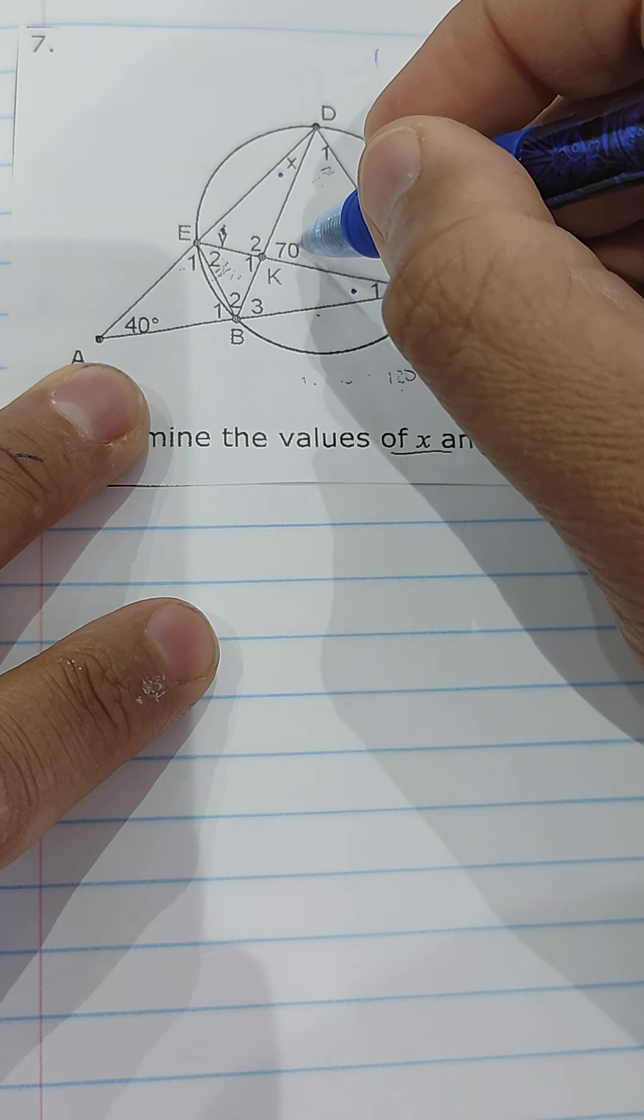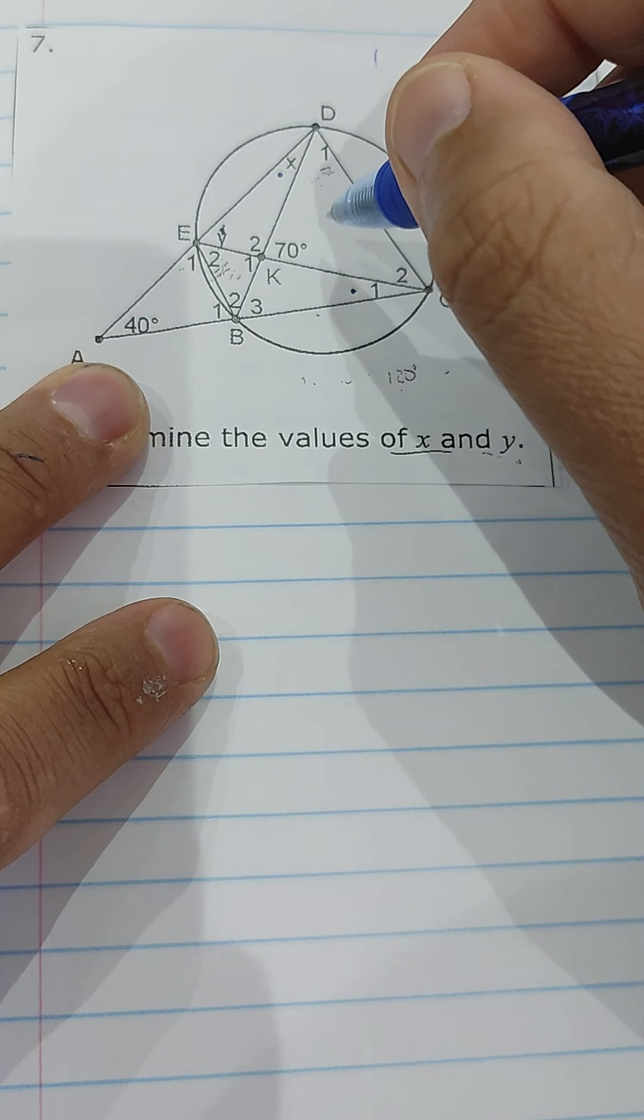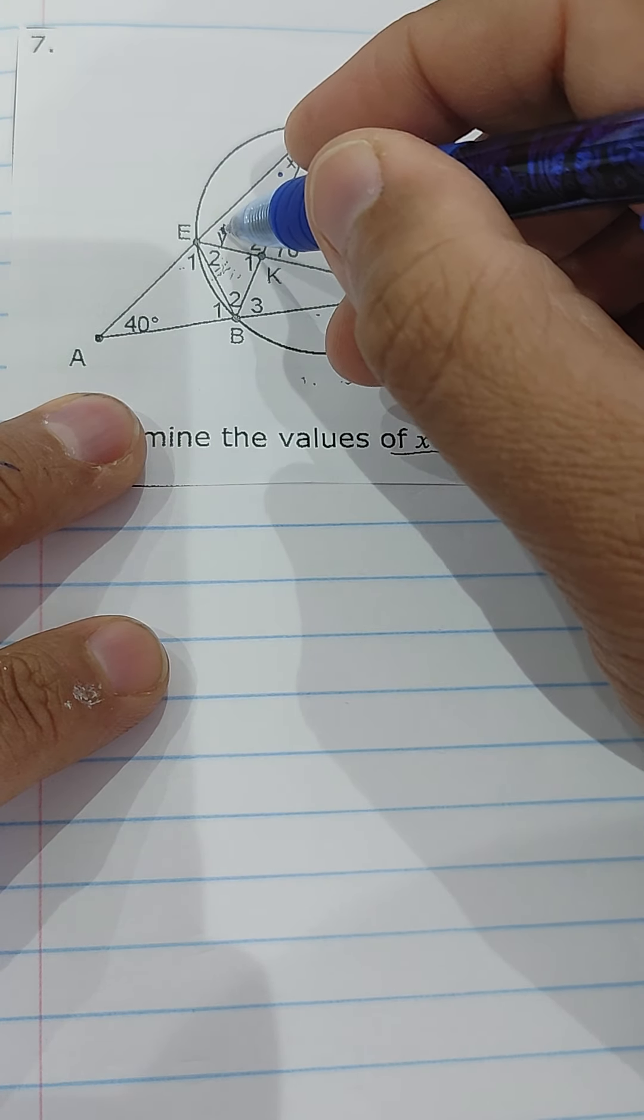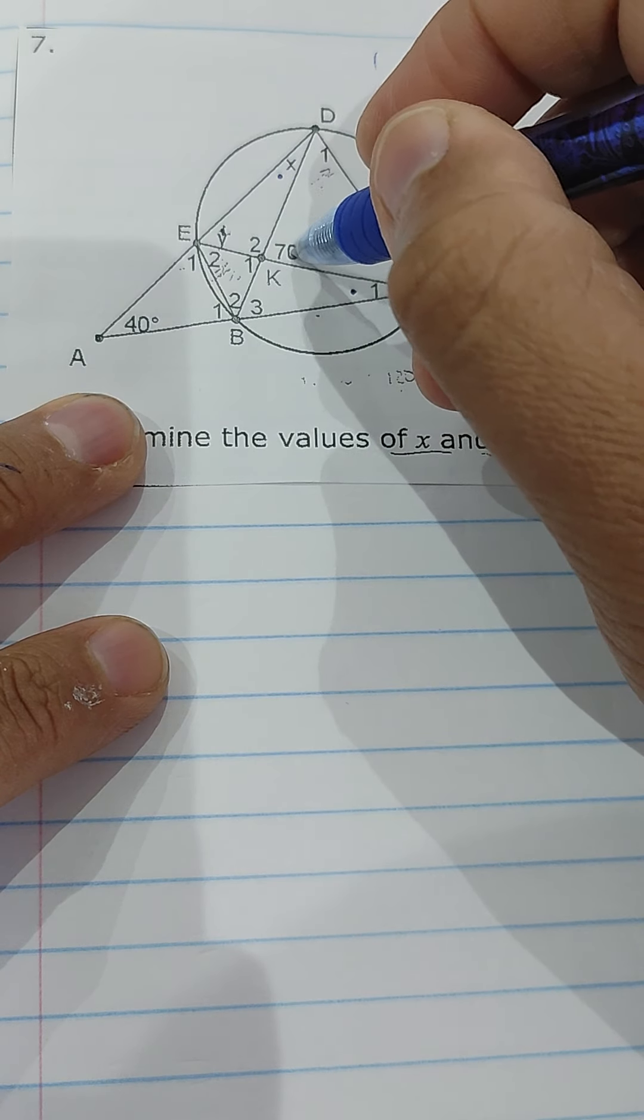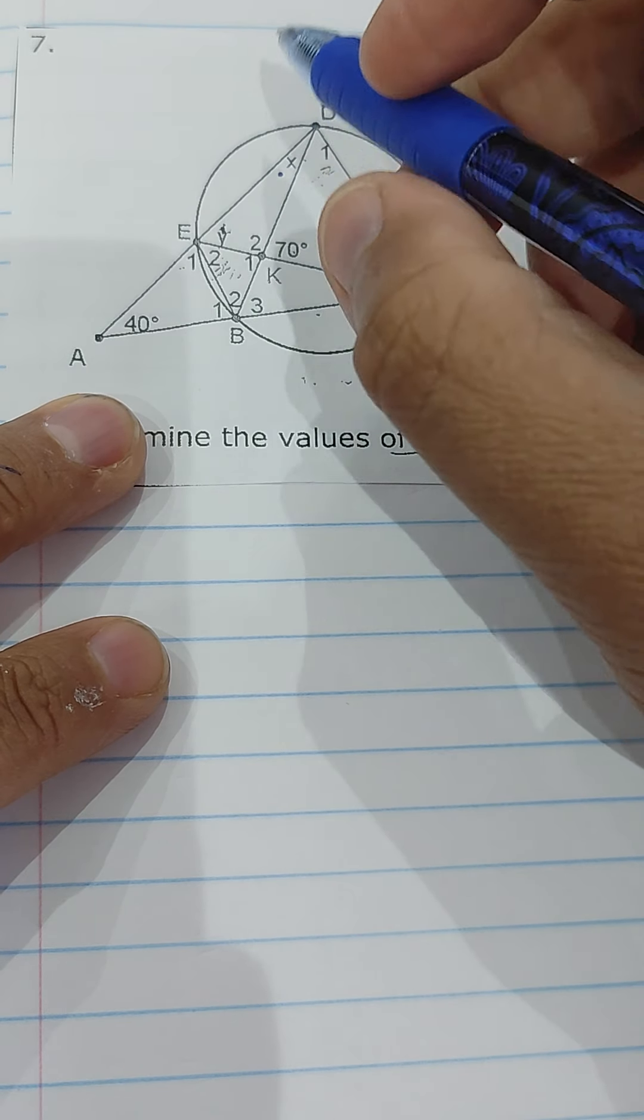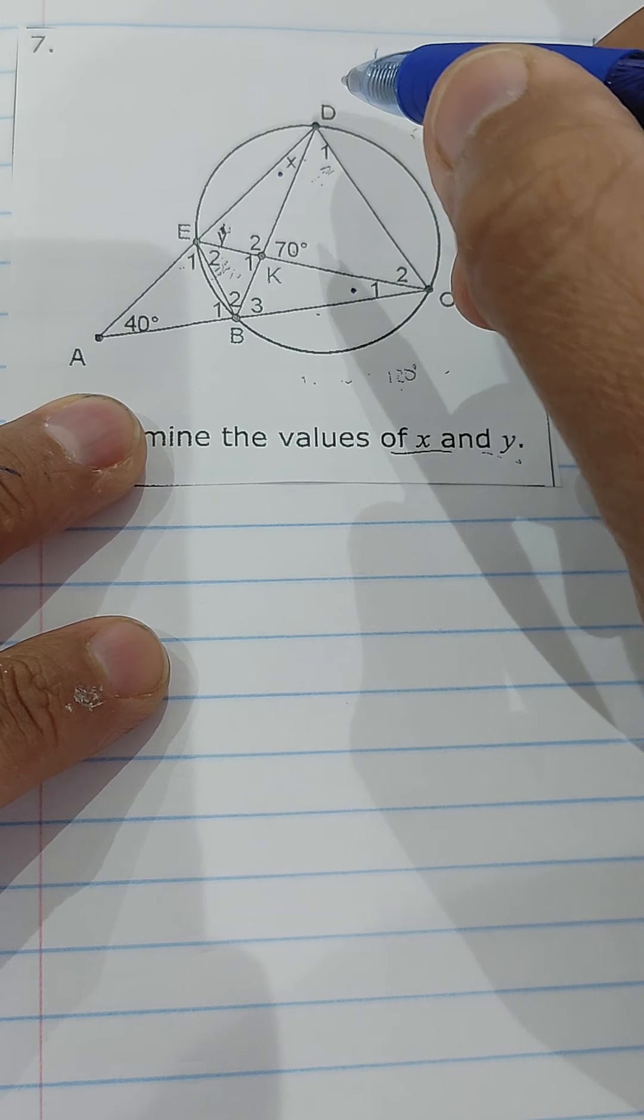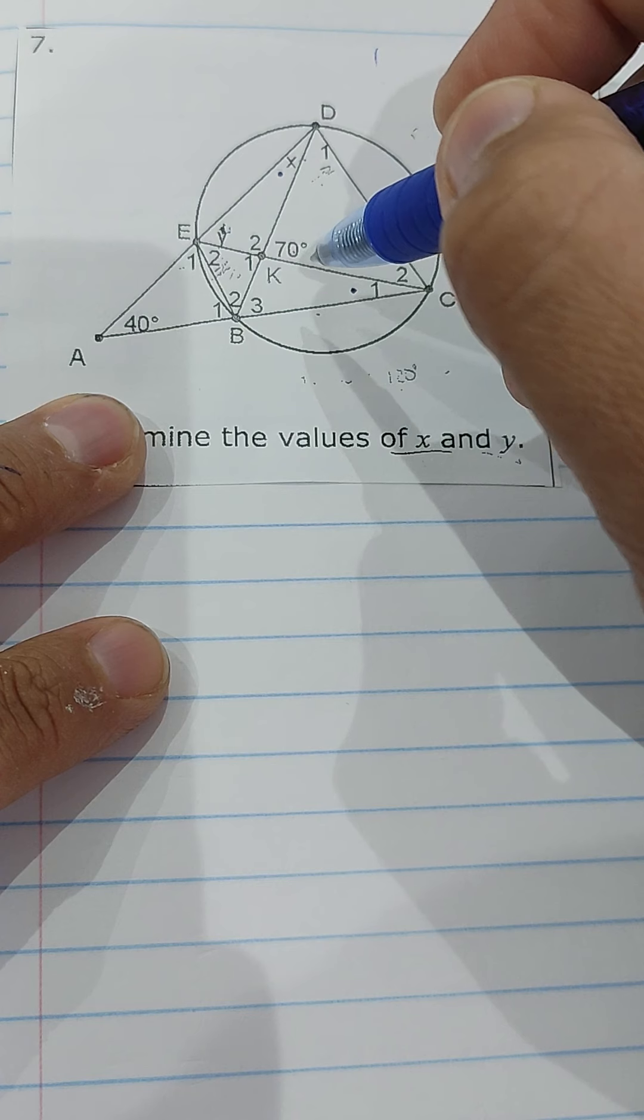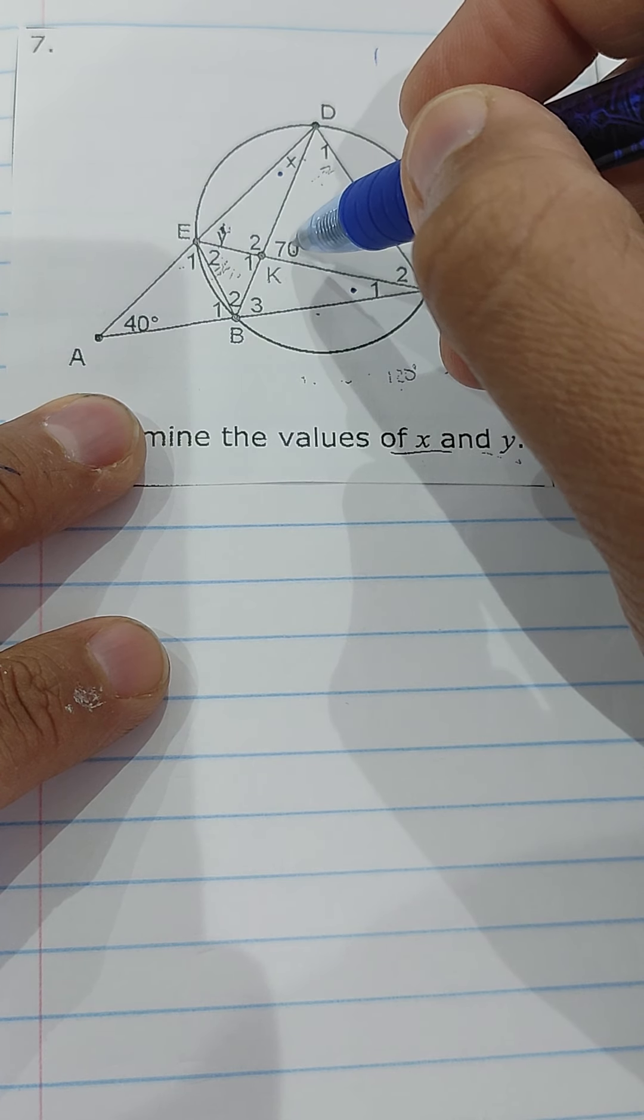Then we have a 70 here. How can we incorporate that 70? We look at where y is. Y is this angle. So we know that 70 is equal to x plus y, exterior angle of triangle is equal to the sum of the opposite. That's in order, so here we have 40, that is 70.